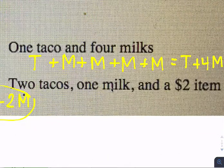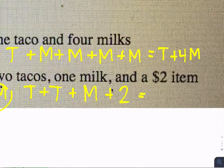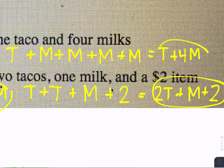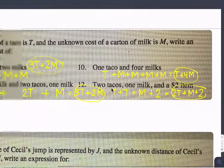Then the next one is two tacos, so taco plus taco plus a milk, and a two dollar item, so plus two. We have two tacos, two T, plus one milk, plus a two dollar item. There's our simplified version with our combined like terms, which we will be spending more time talking about later.